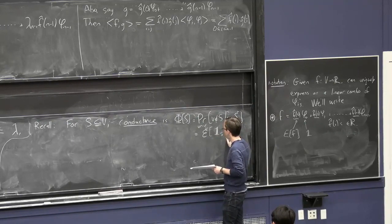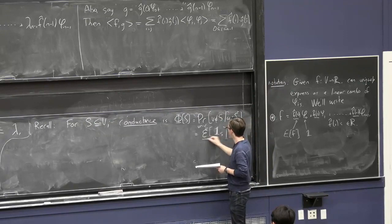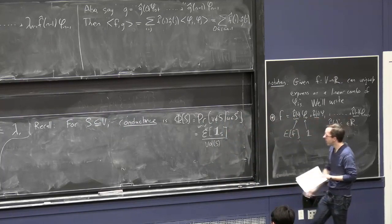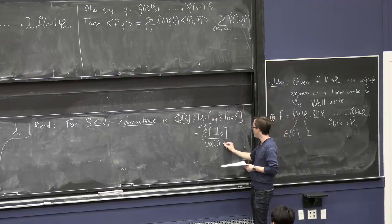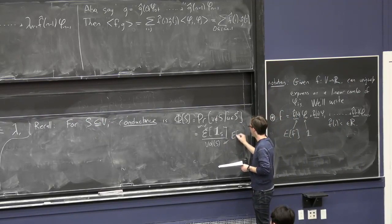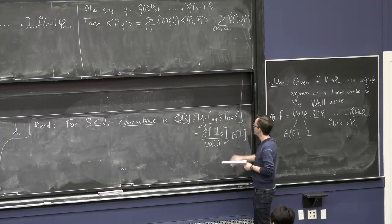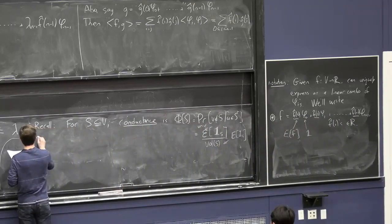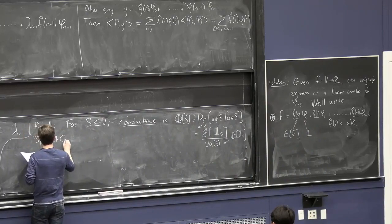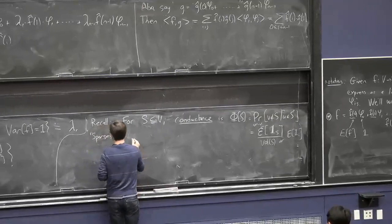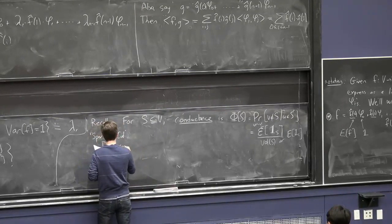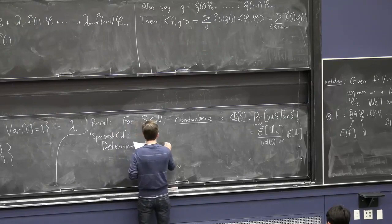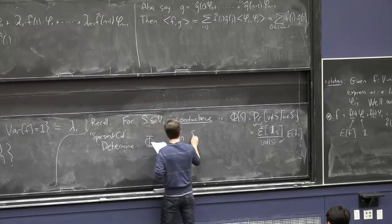And we saw maybe in more than one lecture, this is exactly given by this ratio. Well, OK. Almost given by this ratio. The numerator is, to get this, is the quadratic form. The denominator, we just had volume of S. So, we saw last time, this quantity is exactly equal to this. Let me also mention that this volume is the expected value of the indicator of S.